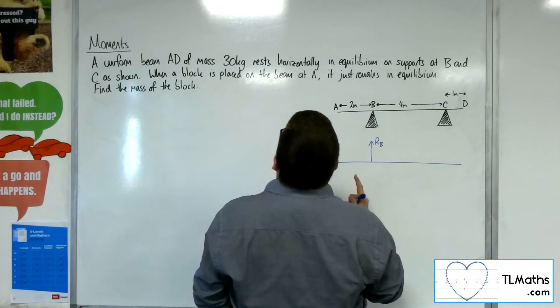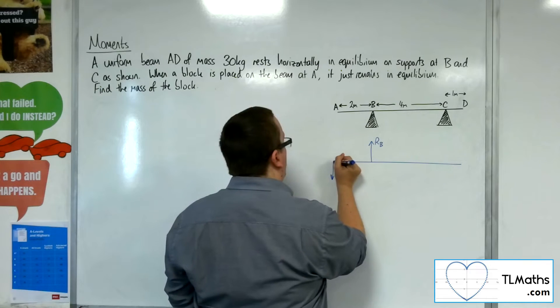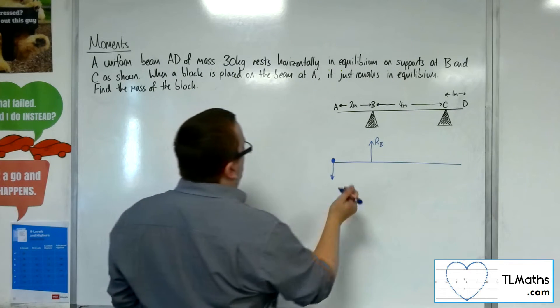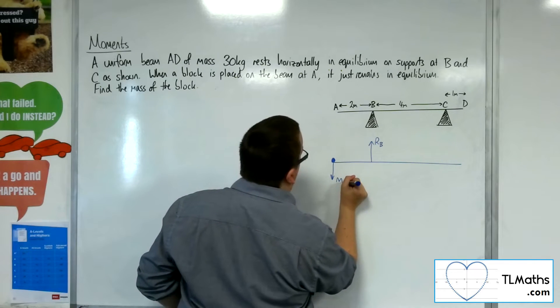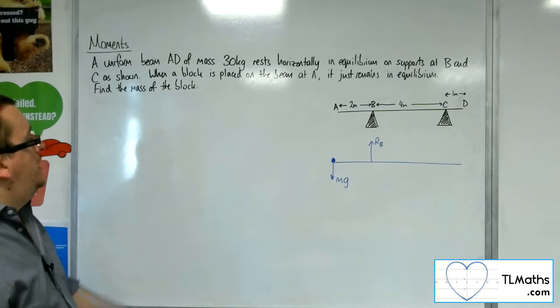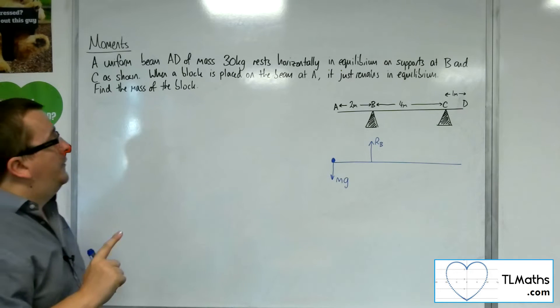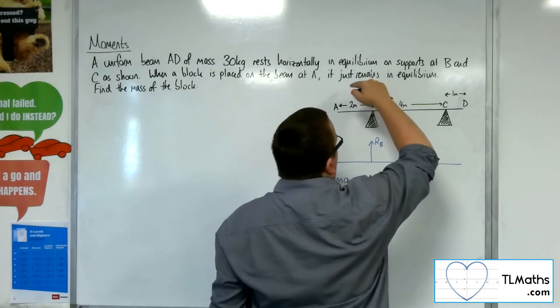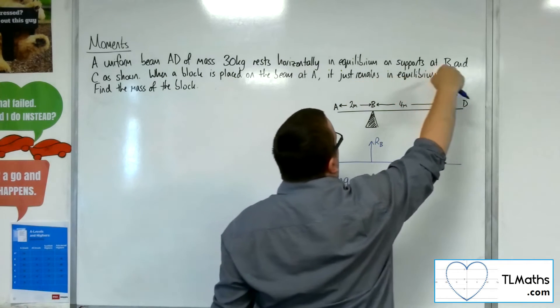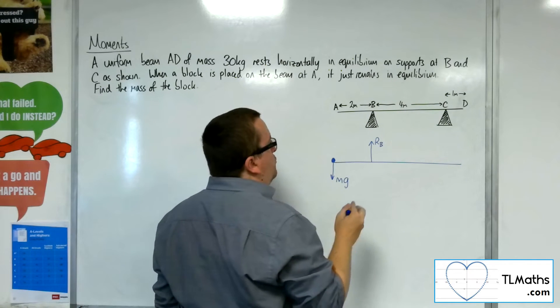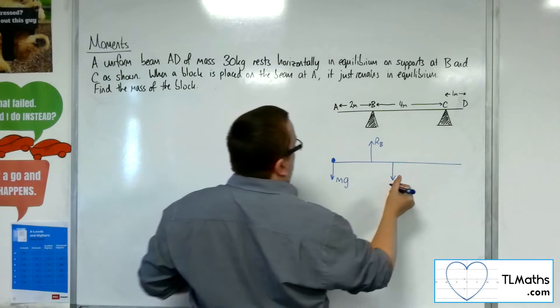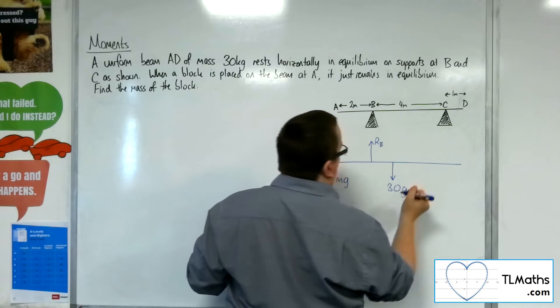Now what else do we know? We know that the particle here has mass M. We don't know its mass, we'll call that M, and that will be weight Mg. We know that the beam itself has a mass of 30 kilos. So the rod is 2 plus 4 plus 1, so 7 metres. So 3 and a half metres along, we've got its weight working down at 30g.